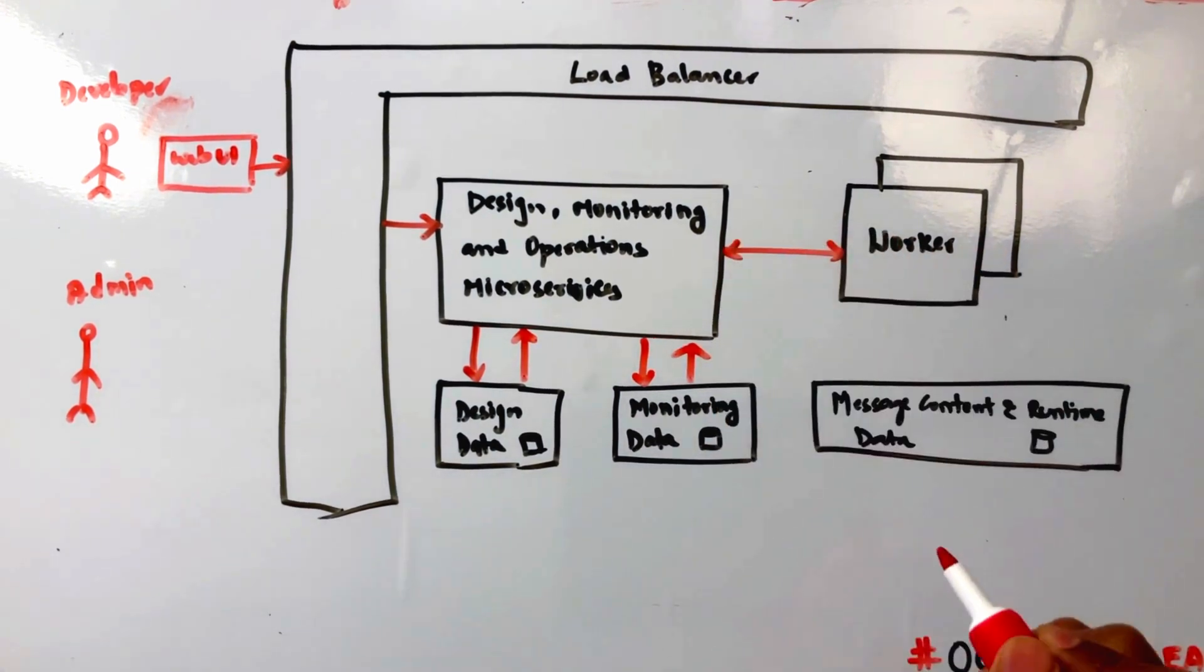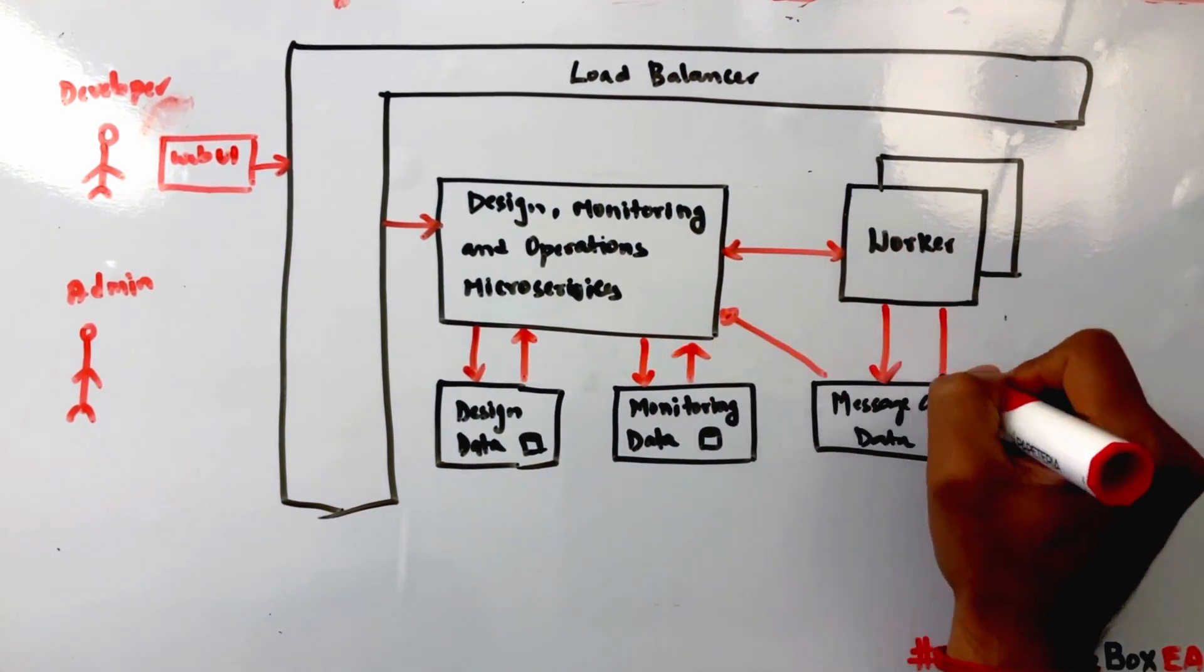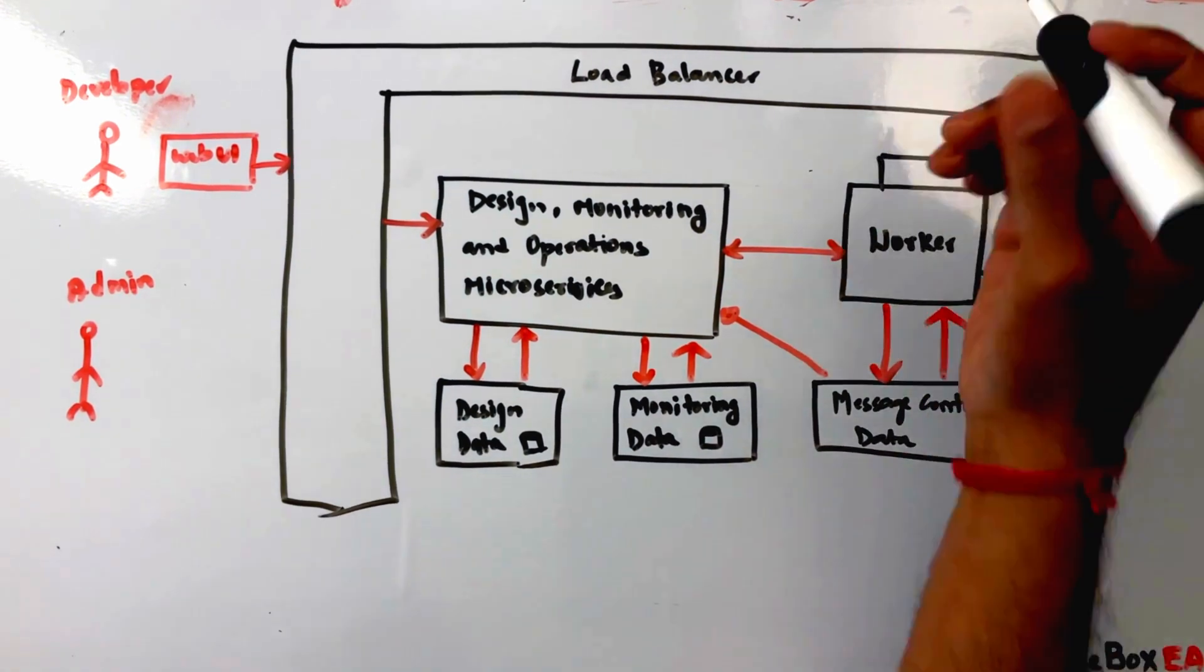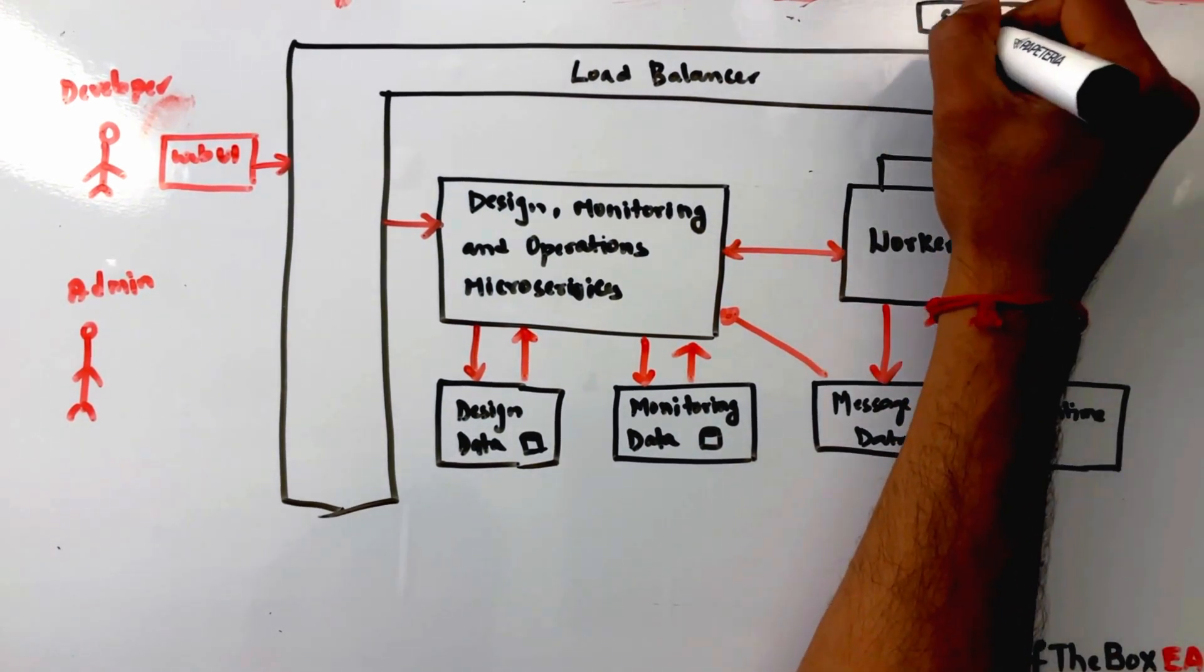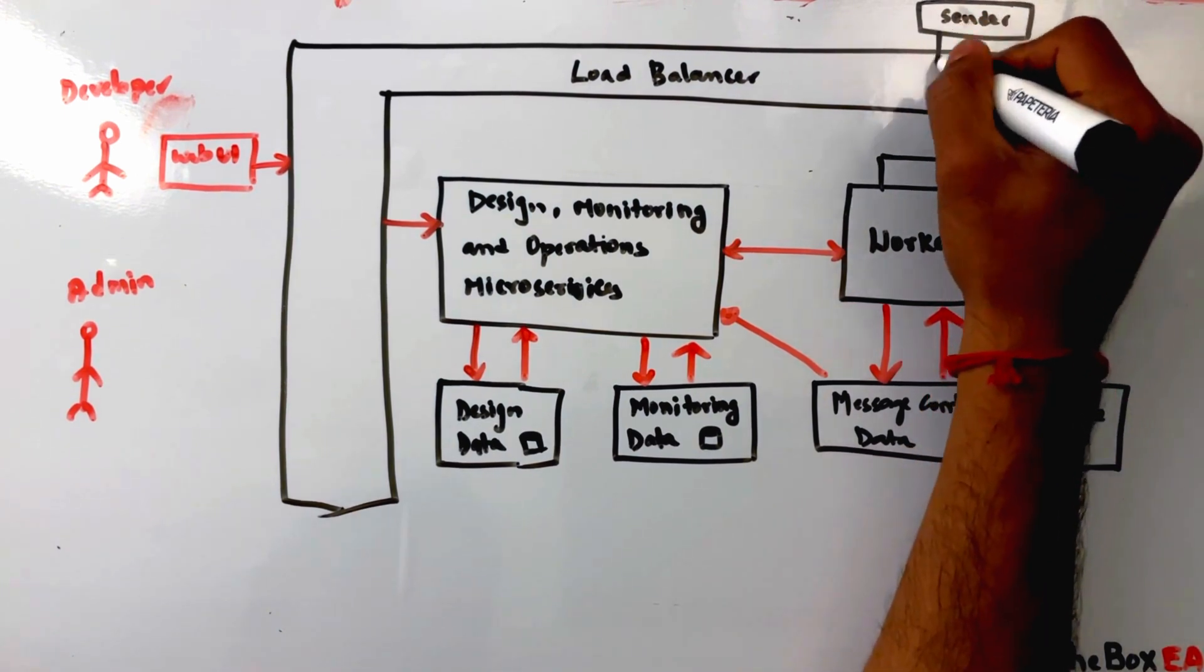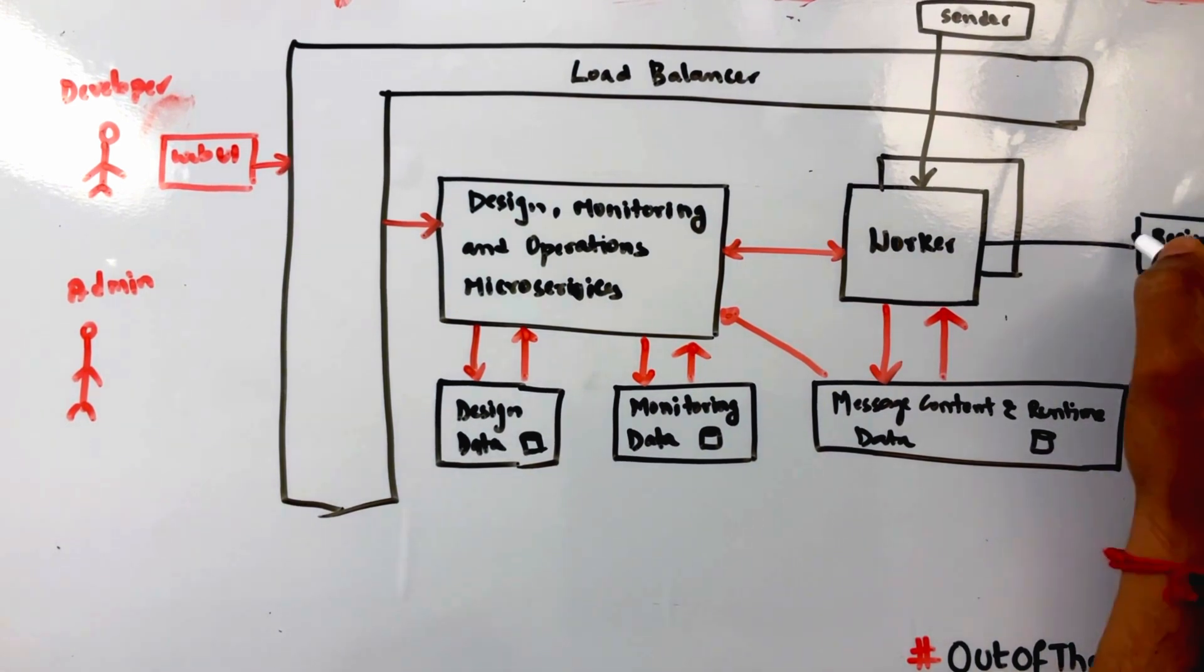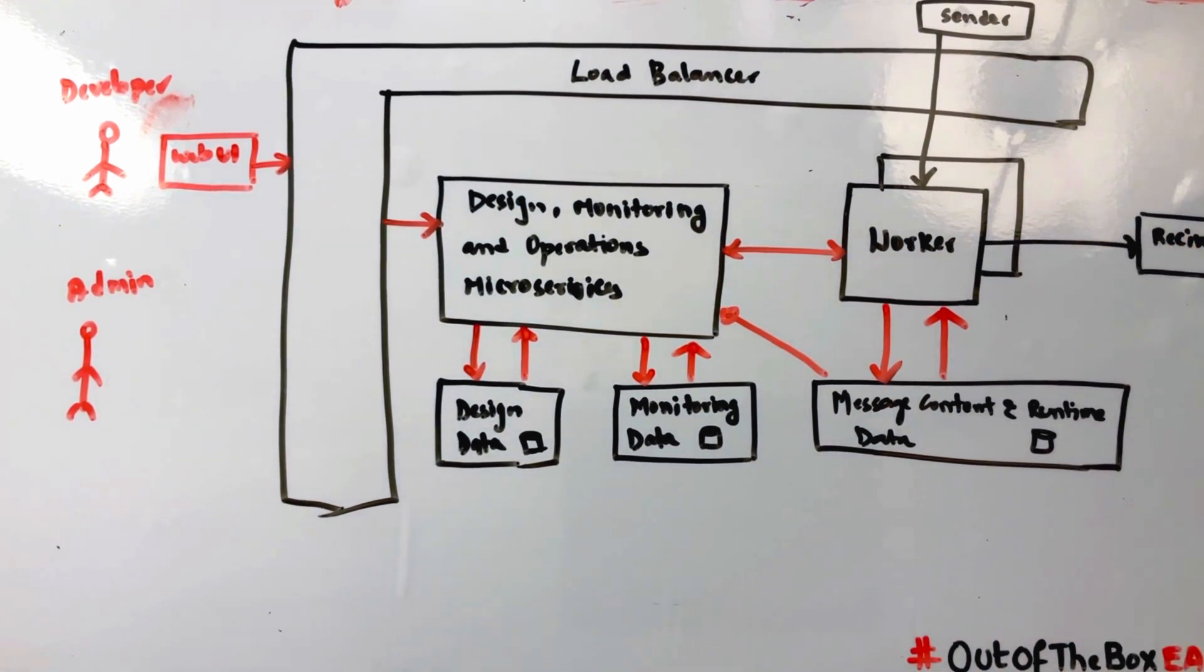Once the integration flow is deployed, the worker processors read the data and execute the integration flows accordingly. After the integration flow is deployed, a sender can transmit a message to a receiver, and the worker process takes over the entire message handling process. The message content and runtime data are persisted in the respective areas.